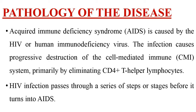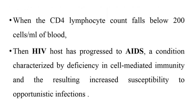The main function of T helper lymphocytes is to provide immunity to our body. When there is destruction of these T helper lymphocytes, the immunity capacity of the individual decreases. HIV infection passes through a series of stages before it progresses into AIDS. When the CD4 lymphocyte count falls below 200 cells, we say the HIV host has progressed to the stage of AIDS, which is characterized by severe deficiency in cell-mediated immunity and the development of opportunistic infections.